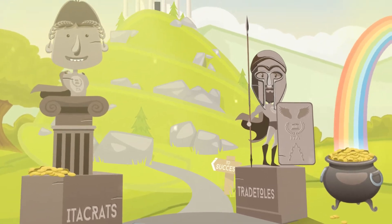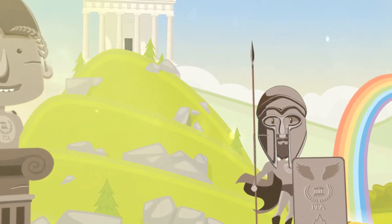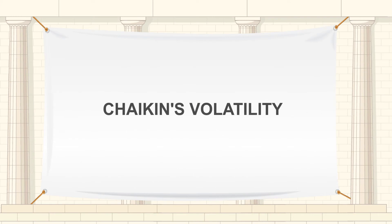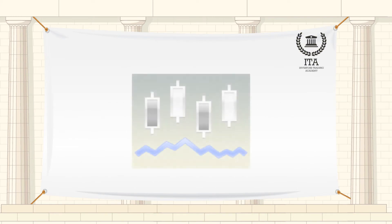Welcome to the Investors Trading Academy talking glossary of financial terms and events. Our word of the day is Chaikin's volatility. Chaikin's volatility is a technical indicator that measures price volatility. It does this by comparing the difference between a series of a security's high and low prices. In general, larger spreads between prices reflect greater volatility.